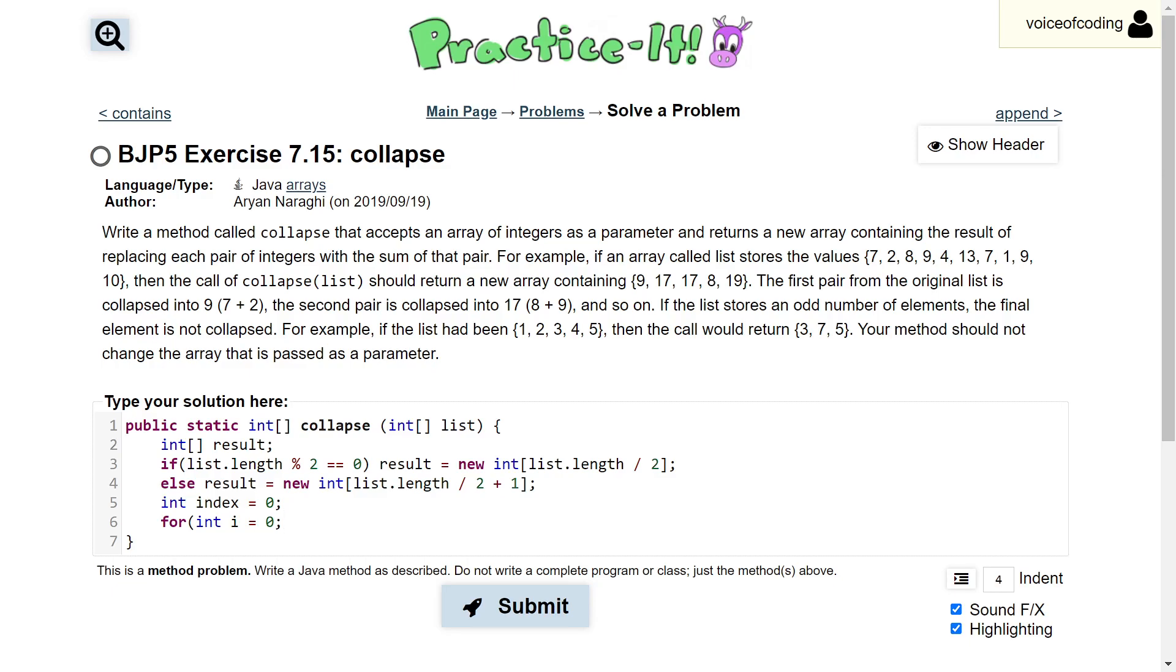so we're going to have i equals 0 here, and go all the way to the very end. So i is less than or equal to list.length, and we're going to do a minus 1.